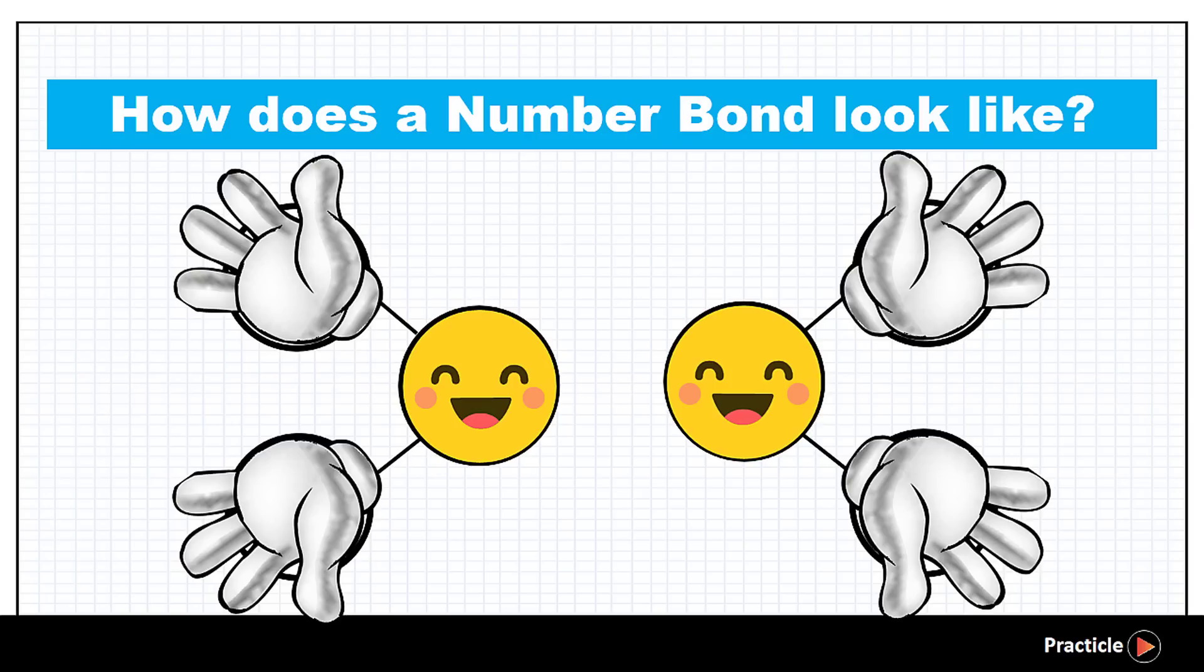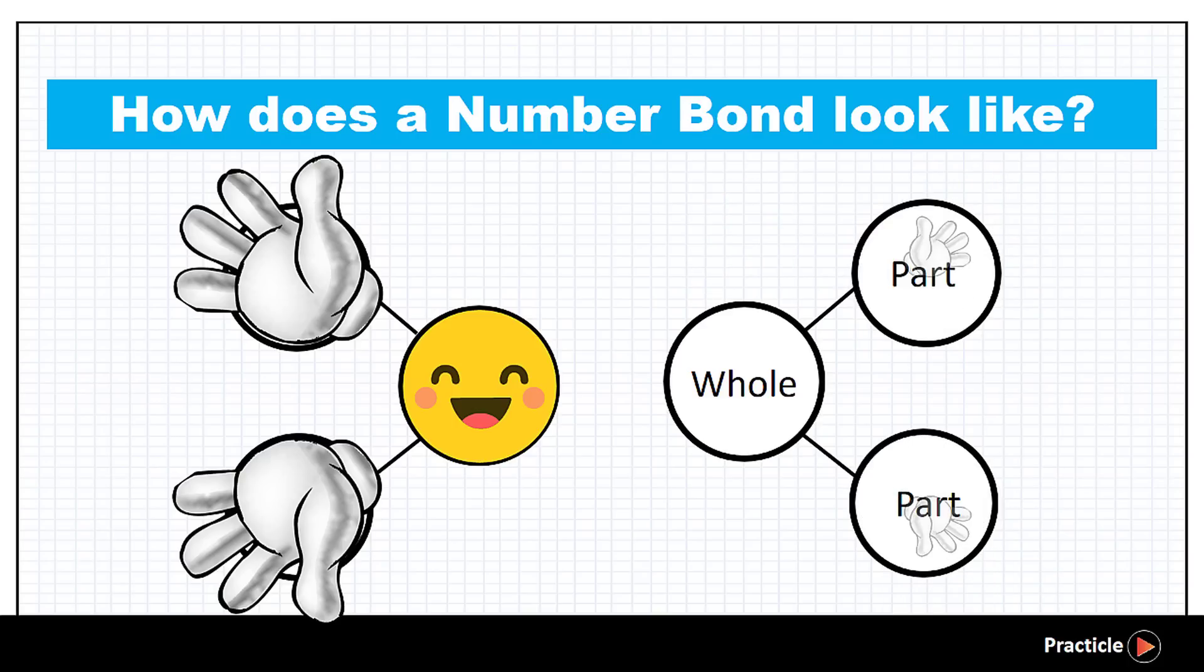In any case, the circle with the 2 hands sticking out will always represent the whole. This whole refers to everything that you have. Just like how you have a whole apple or a whole glass of water or a whole piece of cookie. Then what about the other circles?